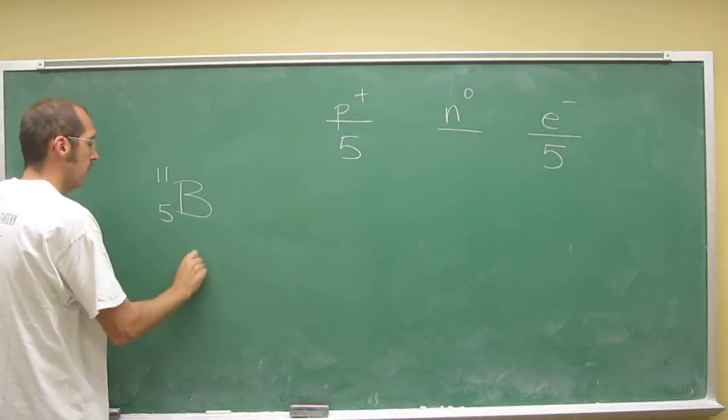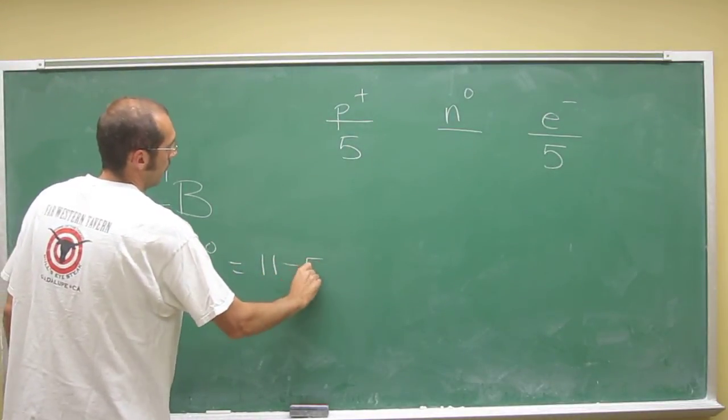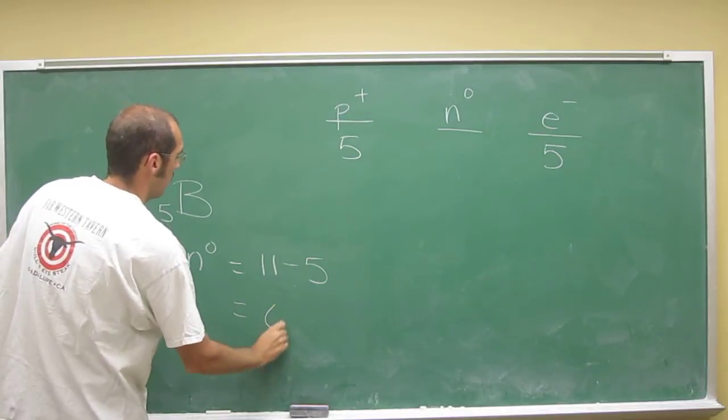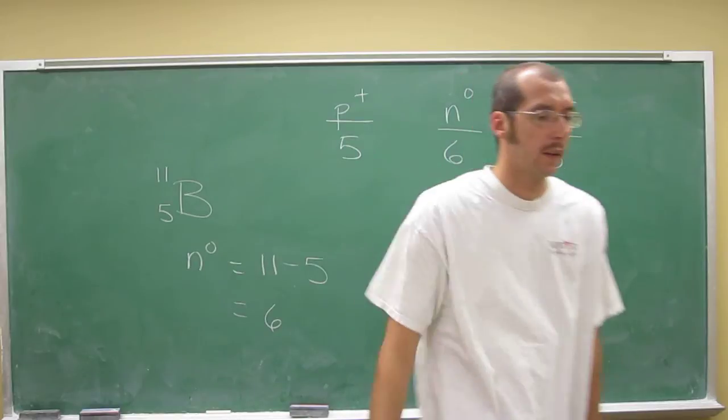What's the number of neutrons? Well, it's going to be the mass number minus the number of protons, or the atomic number. Six neutrons in boron 11. And again,